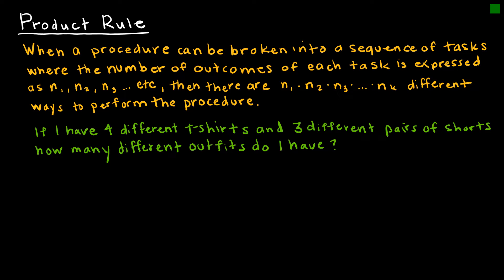For instance, let's say I'm getting dressed and I'm going to wear shorts and a t-shirt. If I have four different t-shirts and three different pairs of shorts, how many different outfits do I have? I can just use the product rule to say four times three equals twelve different outfits.